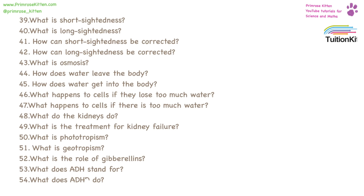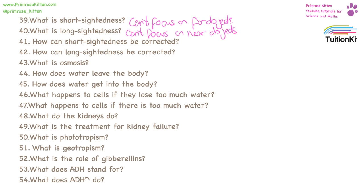Short-sightedness is where you can't focus on distant objects. Long-sightedness is where you can't focus on near objects. Short-sightedness can be corrected with a diverging lens. Long-sightedness is corrected with a converging lens.